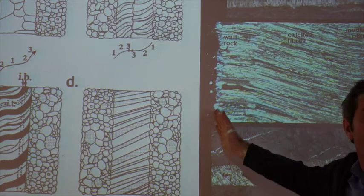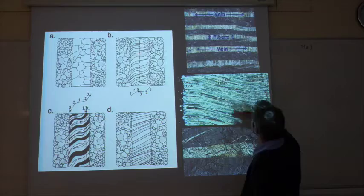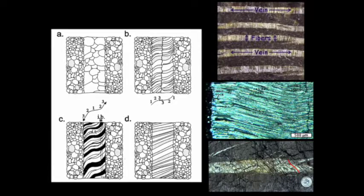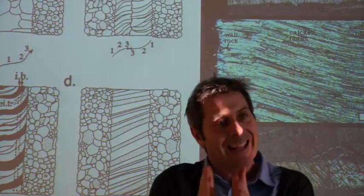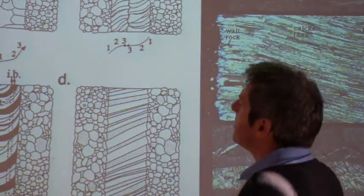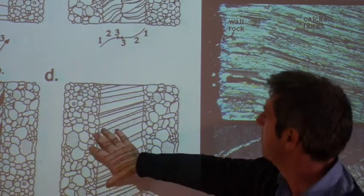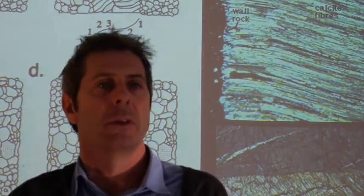Looking at this vein: here's the wall rock — the edge of the fracture. Initially it was opening with fibres at 90 degrees, then you can see a change with a little bit of shear, and then towards the end the shear has gone the opposite way — so there's a whole history recorded there. Sometimes, though, the fracture opens and stays open for a while, then aqueous solution fills it with crystals and it's not recording the opening direction at all.